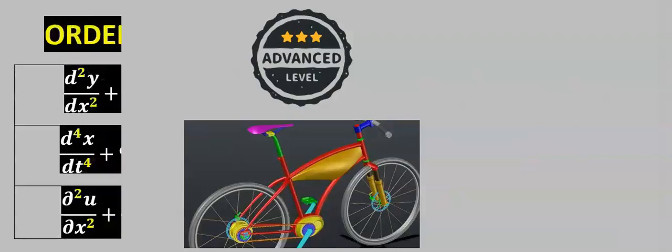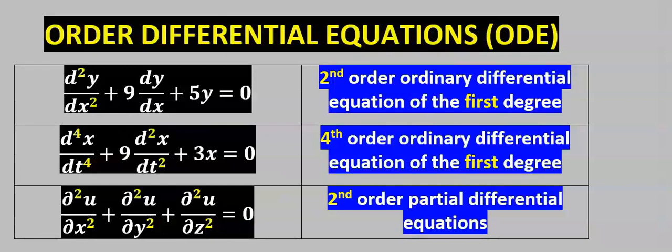Let's briefly look at advanced level mathematics involving higher-order derivatives. In higher level mathematics and applications, we combine first, second, third, fourth, and so on derivatives into one equation. This combination of different higher-order derivatives is known as an ordinary differential equation.